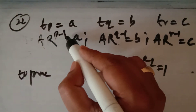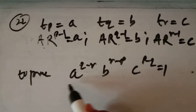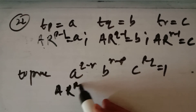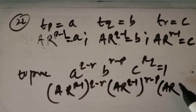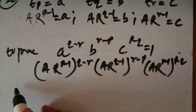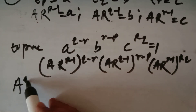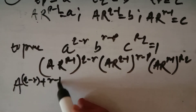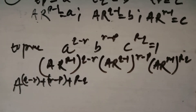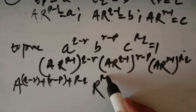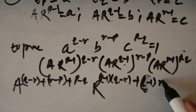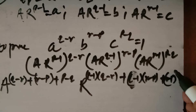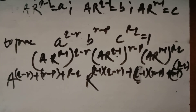Replacing a, b, c in the expression: (A·R^(p-1))^(q-r) · (A·R^(q-1))^(r-p) · (A·R^(r-1))^(p-q). The power of A becomes (q-r) + (r-p) + (p-q), and the power of R becomes (p-1)(q-r) + (q-1)(r-p) + (r-1)(p-q).